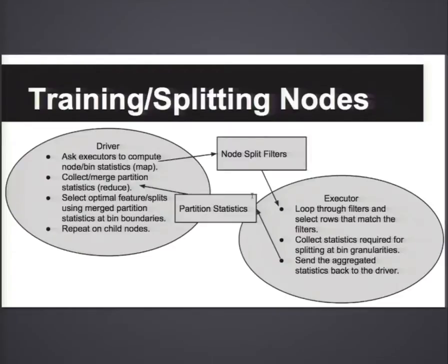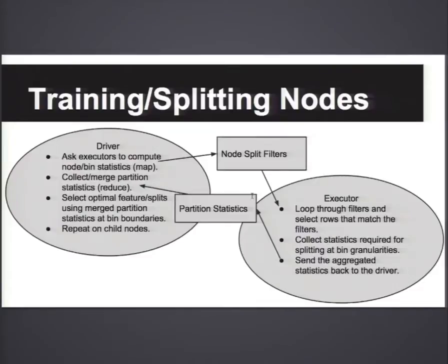This is the pipeline for doing distributed node splitting. The driver has a queue of nodes it wants to process. It selects the first few nodes to process and sends them to the executors. The executor matches the samples that match the node filters and computes statistics for different bins. It does local aggregation of statistics, then sends the partition statistics back to the driver. The driver uses reduce to merge them together and determine the optimal bin split.